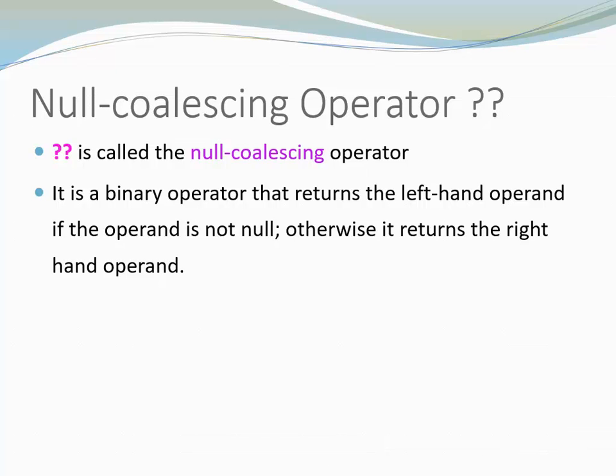Now I want to introduce the null coalescing operator. It is a binary operator that returns the left-hand operand if the operand is not null. Otherwise, it returns the right-hand operand.